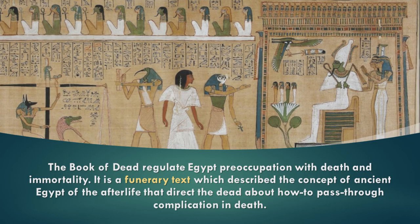The Book of the Dead regulated Egypt's preoccupation with death and immortality. It is a funerary text which describes the ancient Egyptian concept of the afterlife and directed the deceased about how to pass through complications in death. The Book of the Dead tells the story of the journey of those who have died — a step-by-step procedure of where to go next, until reaching the pleasant afterlife.